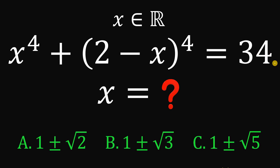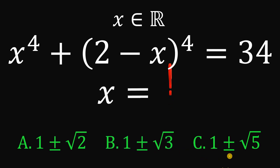Can you solve this math challenge? Here's the question. Given that x is a real number and the equation x raised to the fourth power plus (2 minus x) raised to the fourth power equals 34, the goal is to find the value of x that satisfies this equation. The choices are: Letter A, 1 plus or minus square root of 2; Letter B, 1 plus or minus square root of 3; or Letter C, 1 plus or minus square root of 5.